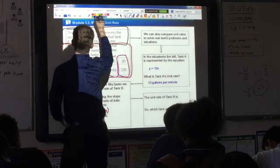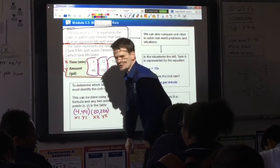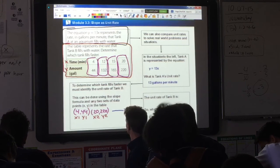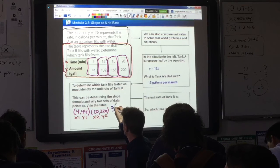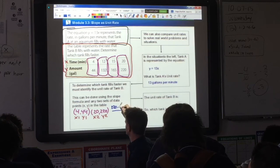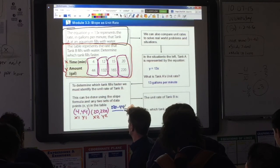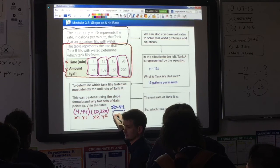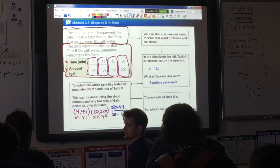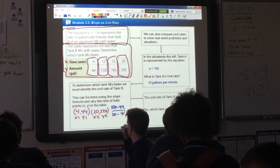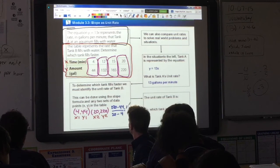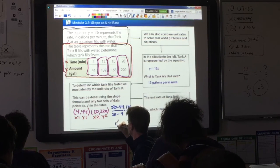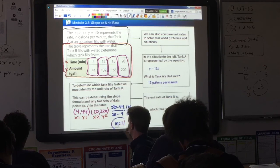Substitute it in. What are we going to get here? It's y2, which is 220, minus y1, which is 44. And then x2 is going to be 20, minus 4. And when you do the math here, you're going to end up with, what's 220 minus 44? 176. 176 divided by, what's 20 minus 4? 16. And then 176 divided by 16, my slope would be? 11. My slope is 11. 176 divided by 16 gives me 11, so the unit rate of tank B is 11 gallons per minute.